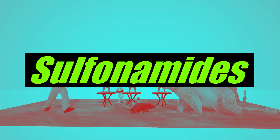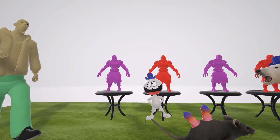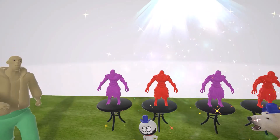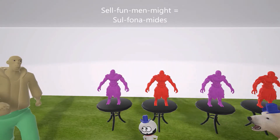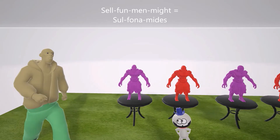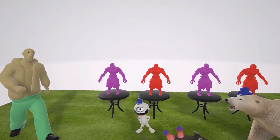Welcome to our scene on the sulfonamides, represented by a salesman who sells fun men with dynamite — 'sulfonamides.' In this video we're going to talk about the sulfonamides and the different types: sulfamethoxazole, sulfisoxazole, and sulfadiazine. This is easy to remember — they all start with 'sulfa.'